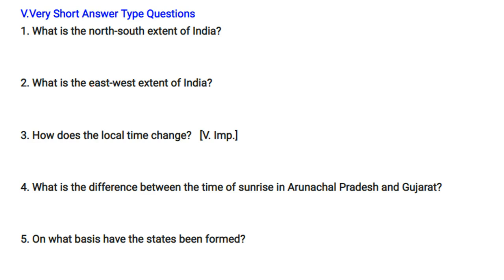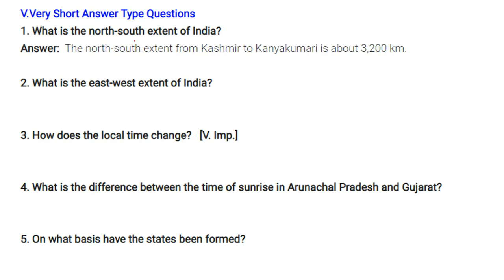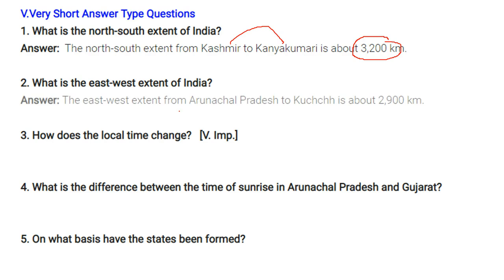What is the north-south extent of India? The north-south extent of India is around 3,200 kilometers, from Kashmir to Kanyakumari. What is the east-west extent of India? The east-west extent from Arunachal Pradesh to Kutch in Gujarat is about 2,900 kilometers.